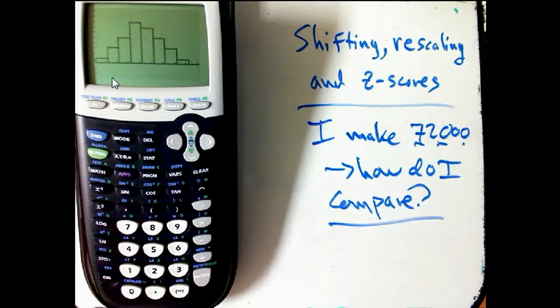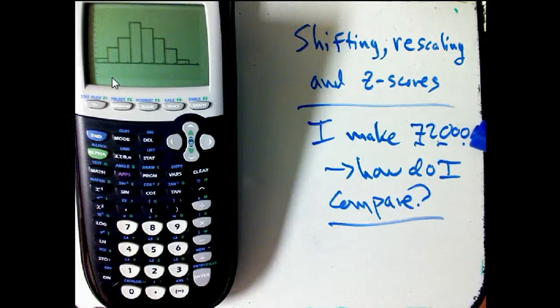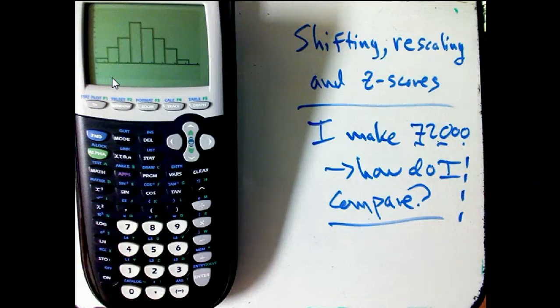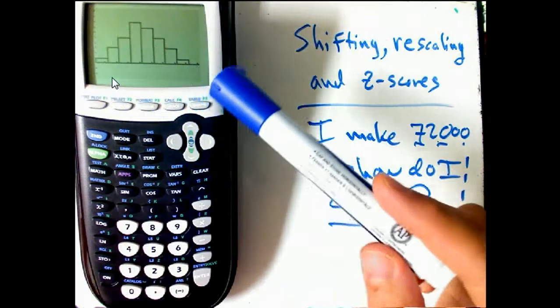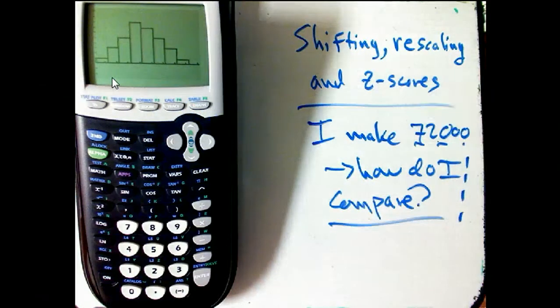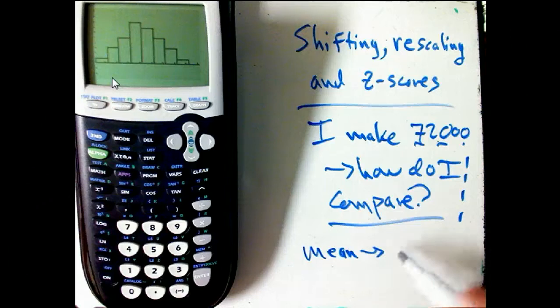Is $72,000 a good figure for this company? It really depends on what I do. If this is flipping burgers at McDonald's, I think that's pretty good. If I'm a neurosurgeon, that's probably not so good. So I want a standardized way of saying how do I compare, and that's what shifting and rescaling does. We want to shift this so that we have a standardized way of comparing things. I'd like the mean, if I get an average score, if this is an average salary, I'd like the mean to register zero, not above and below.